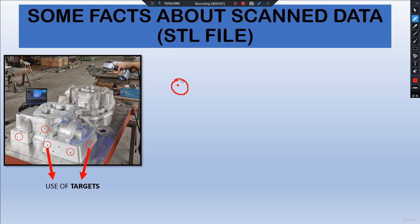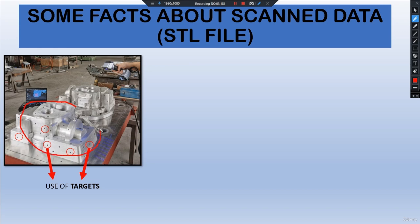Targets are used because when scanning a large object, one person might scan one portion and in another setting scan another portion. To compile these two images, the software needs reference points — and that reference is provided by the targets. With their use, data is collected and registered. The more angles you scan, the more targets you need, as the scanner has to cover larger areas.